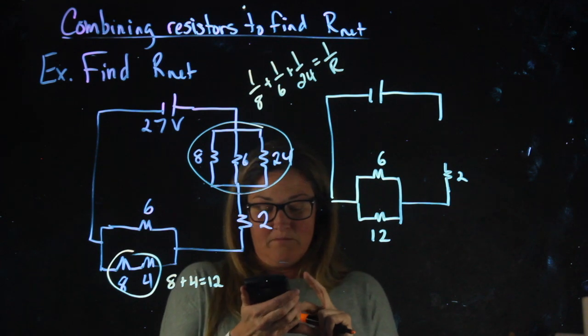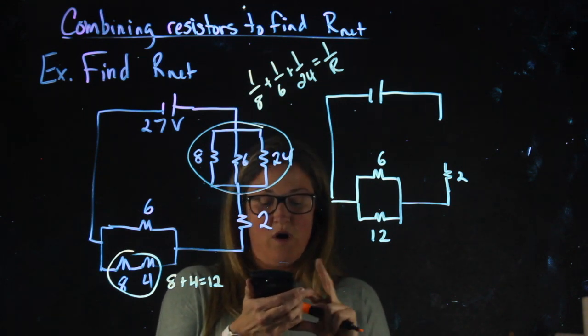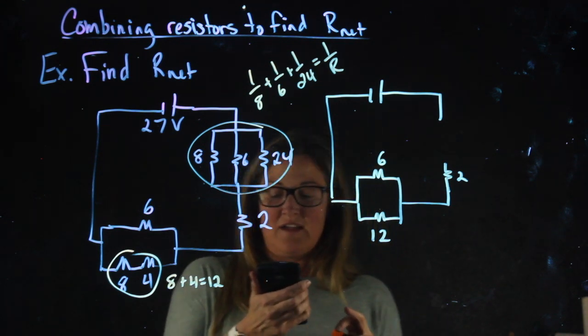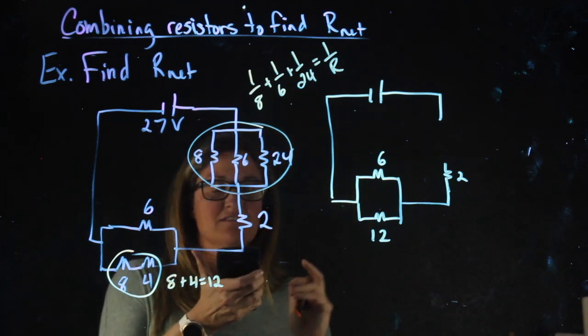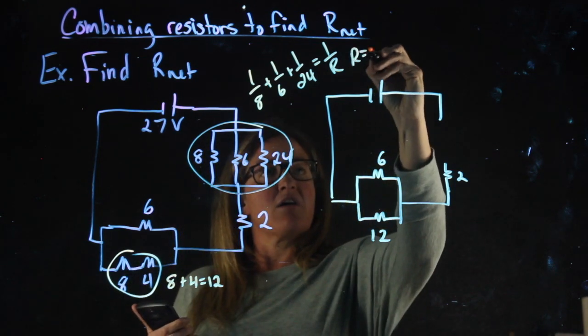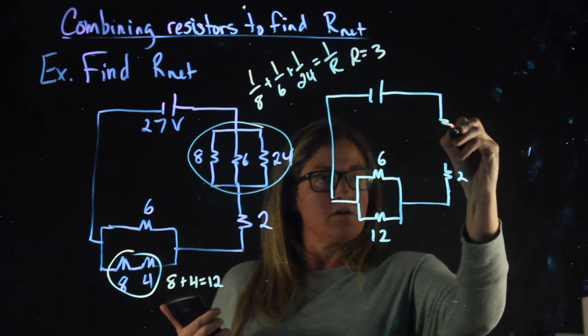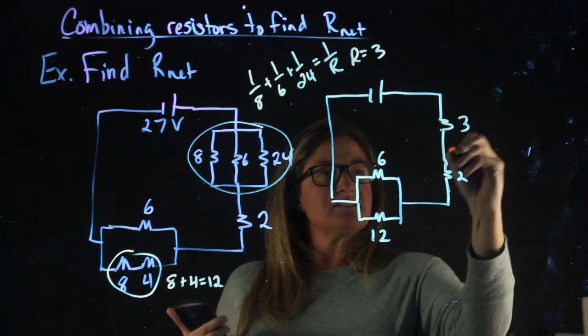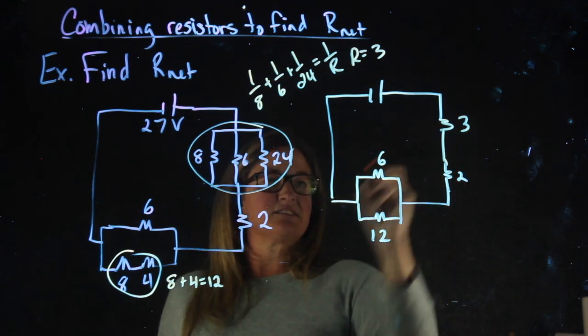1 over 8 plus 1 over 6 plus 1 over 24 gives me 0.333. 1 over that answer gives me an r of 3. So this is the same as having a 3 ohm resistor here.